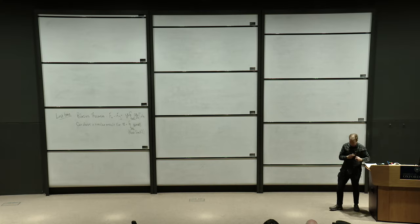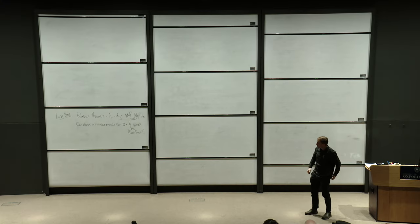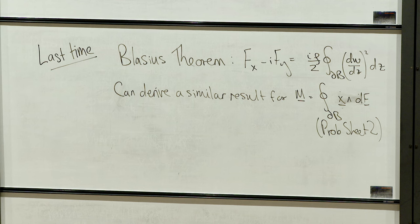Just a reminder that what we were talking about last time was Blasius' theorem. We showed in the last lecture that the force on a two-dimensional body is given by a contour integral around the boundary of the body. We talked about the complex potential w, and we showed that the complex force — a combination of the force in the x and y direction — is a contour integral of the derivative of the potential squared, multiplied by i times the density rho divided by two.